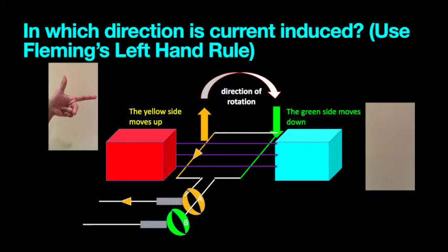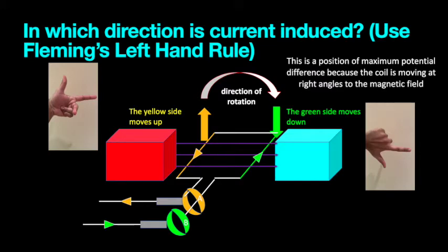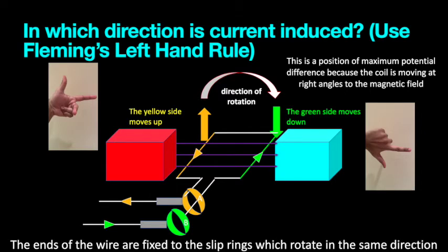In this case, our thumb will be pointing downwards, because this is the motion of the coil. Our field will still point to the right, as is the direction of the magnetic field. And our current will be in this direction. This is the position of maximum potential difference. This is the position where the most current is induced. And this is because our coil is cutting the magnetic field lines directly.